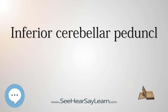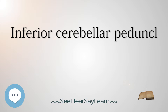Posterior spinocerebellar tract: carries unconscious proprioceptive information from the lower part of the trunk and lower limb. This tract originates at the ipsilateral Clark's nucleus (T1–L1), and travels upward to reach the inferior cerebellar peduncle and synapses within the spinocerebellum, also known as the paleocerebellum.